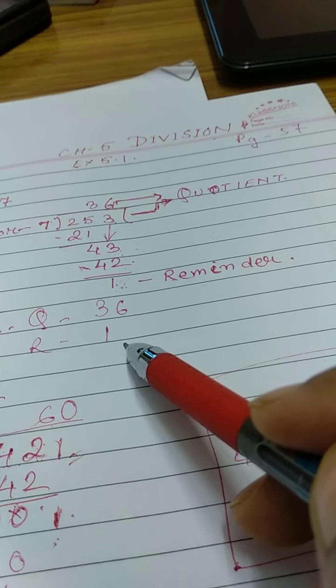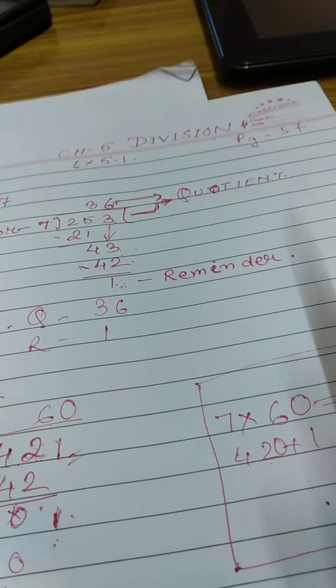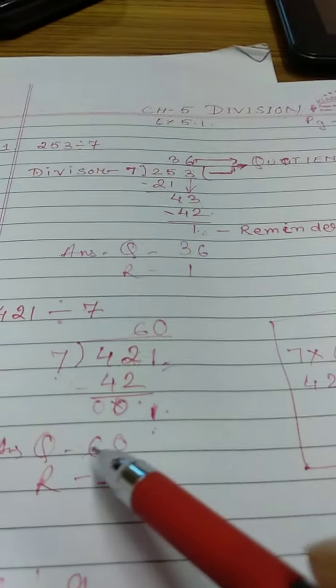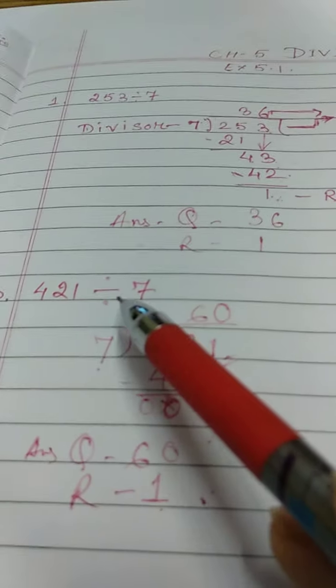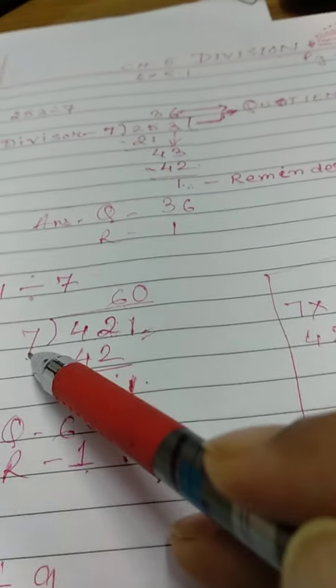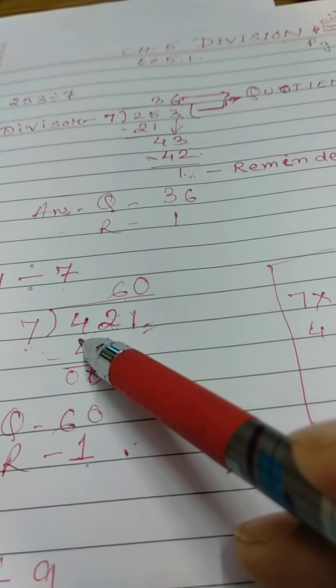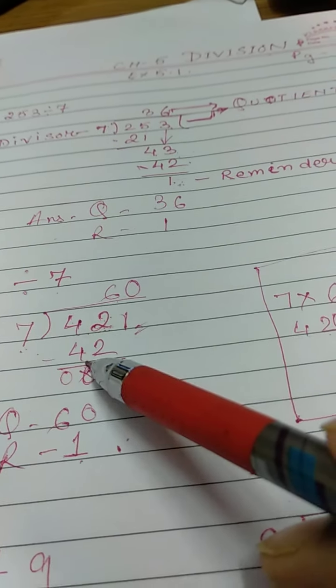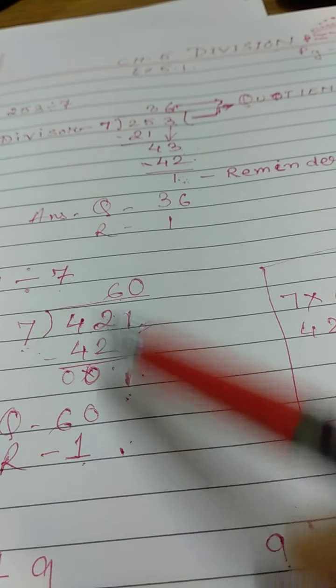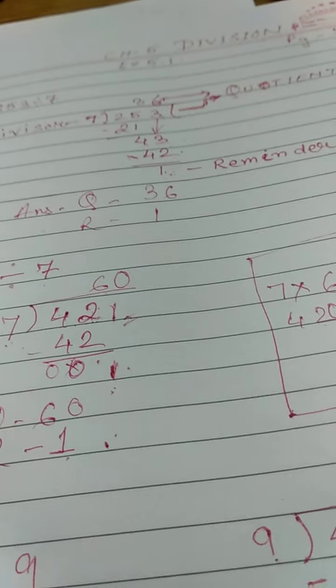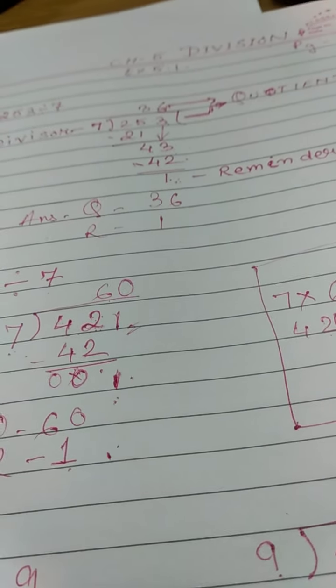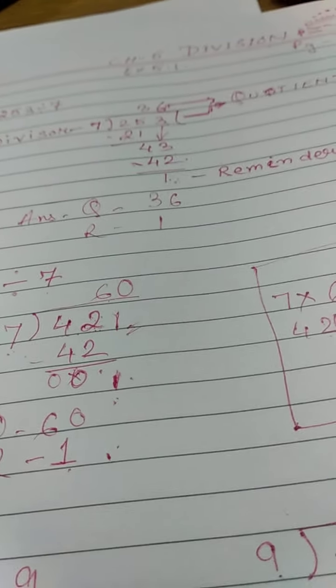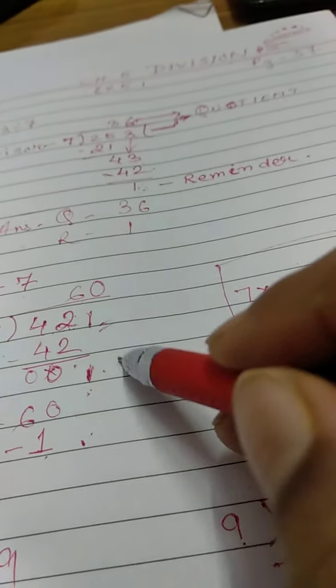So this is the process of doing division. Now one more thing I will teach you. Again I have taken 421 divided by 7. 7 times 6 is 42. So I have written 42. Subtraction 0 I am getting. 1 I am taking down because it is division. As much numbers are there, I have to bring it down. After bringing it down, I am finding nothing here.